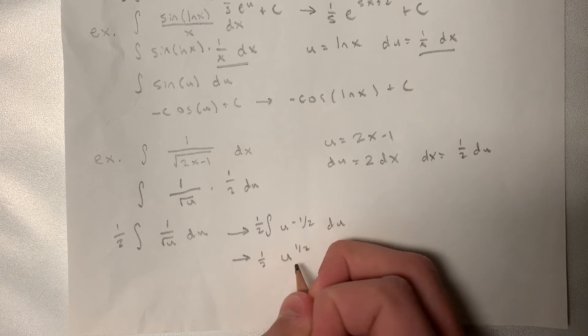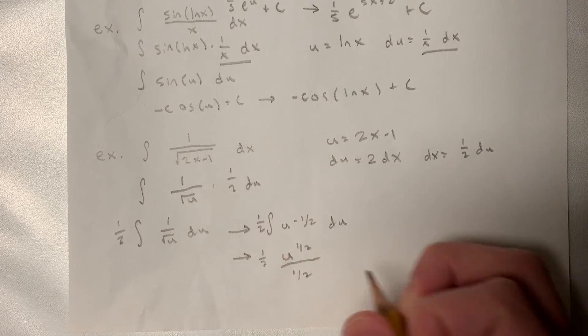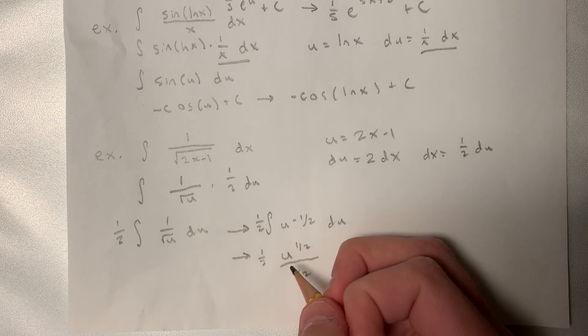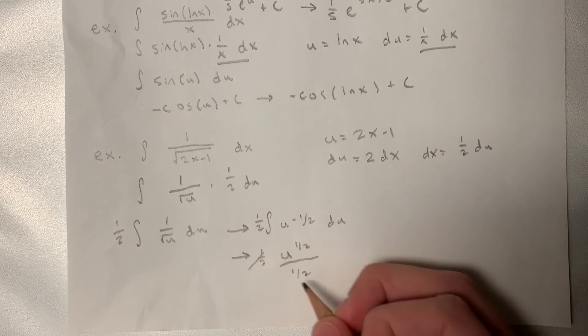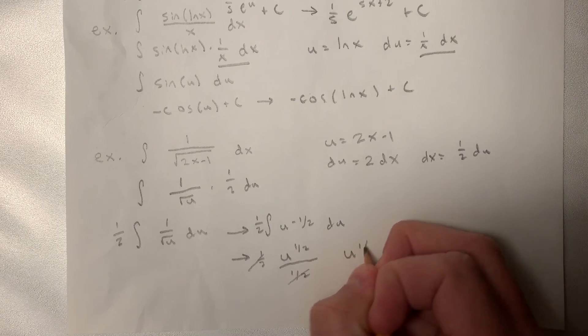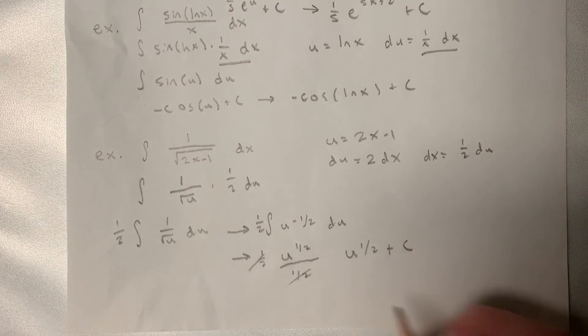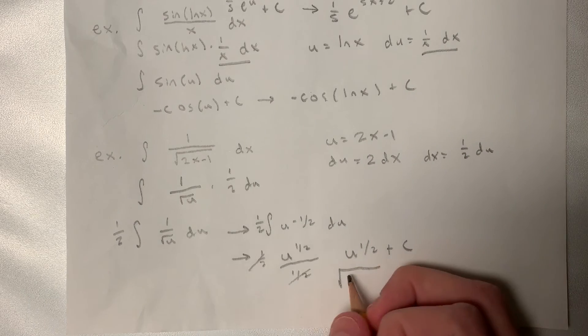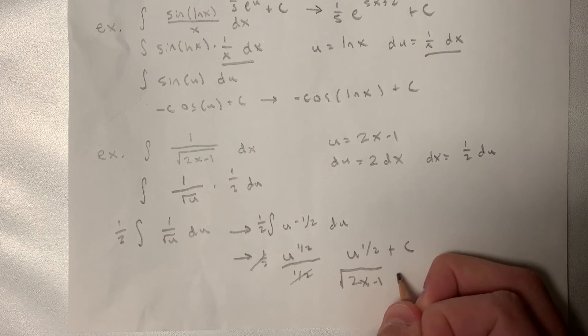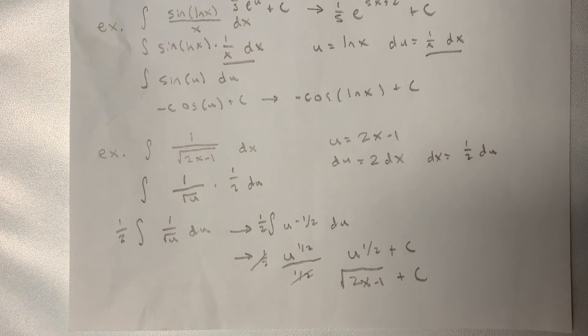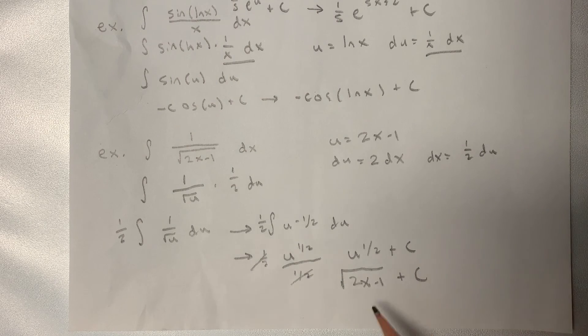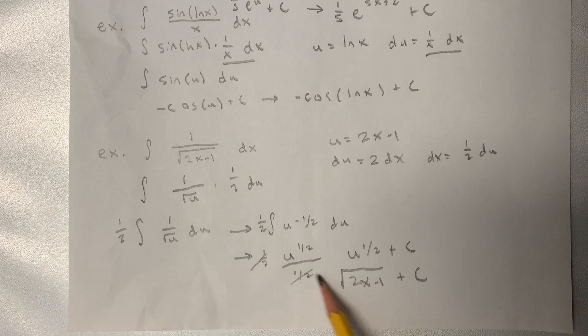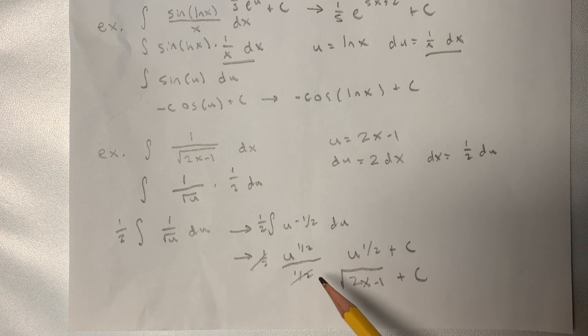So we get u to the 1 half over 1 half. So we can bring out this 1 half on the bottom to cancel out with that. So we just get u to the 1 half plus c. Bring back in our u, we get the square root of 2x minus 1 plus c. So that's the answer to this somewhat difficult looking integral. It comes out pretty easily to just a basic antiderivative.